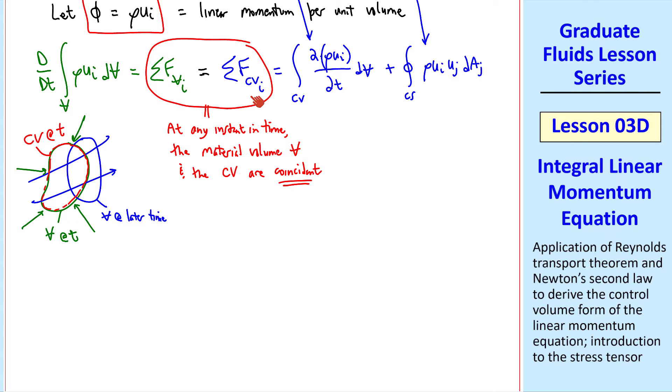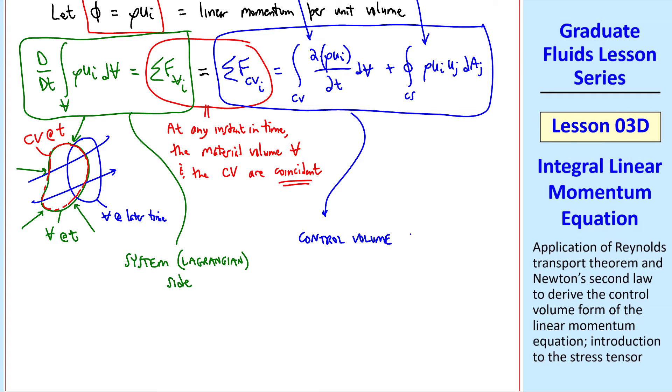Now we can look at the left and right sides of this equation like we did with conservation of mass. This part is the system, or Lagrangian side. And this part is the control volume, or Eulerian side. The system side comes from Newton's second law, the fundamental momentum equation for a material volume. The right side comes from Reynolds transport theorem, thus it is our integral or control volume form of the linear momentum equation.